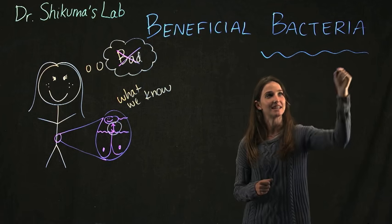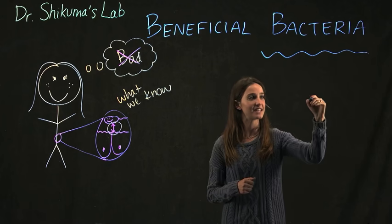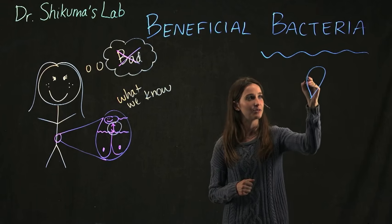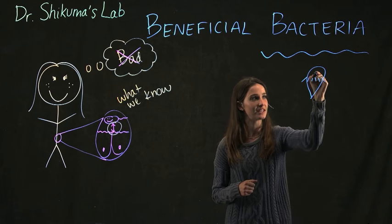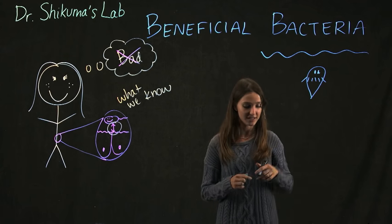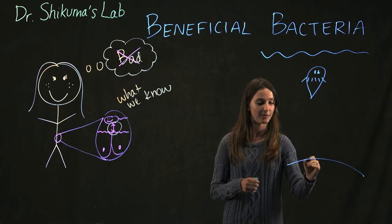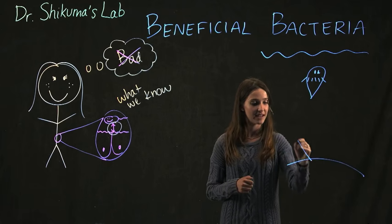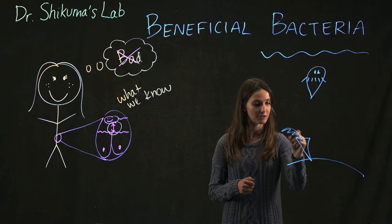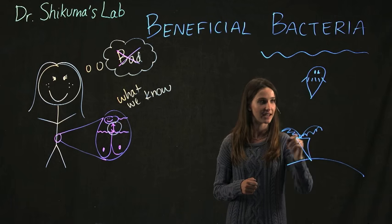So we study tube worms that live under the sea. And they're these really cute little larvae. And they swim around under the sea. And then they have to decide and find a place on the bottom of the sea to grow up. And then they settle down and become these little tube worms that look kind of like palm trees.